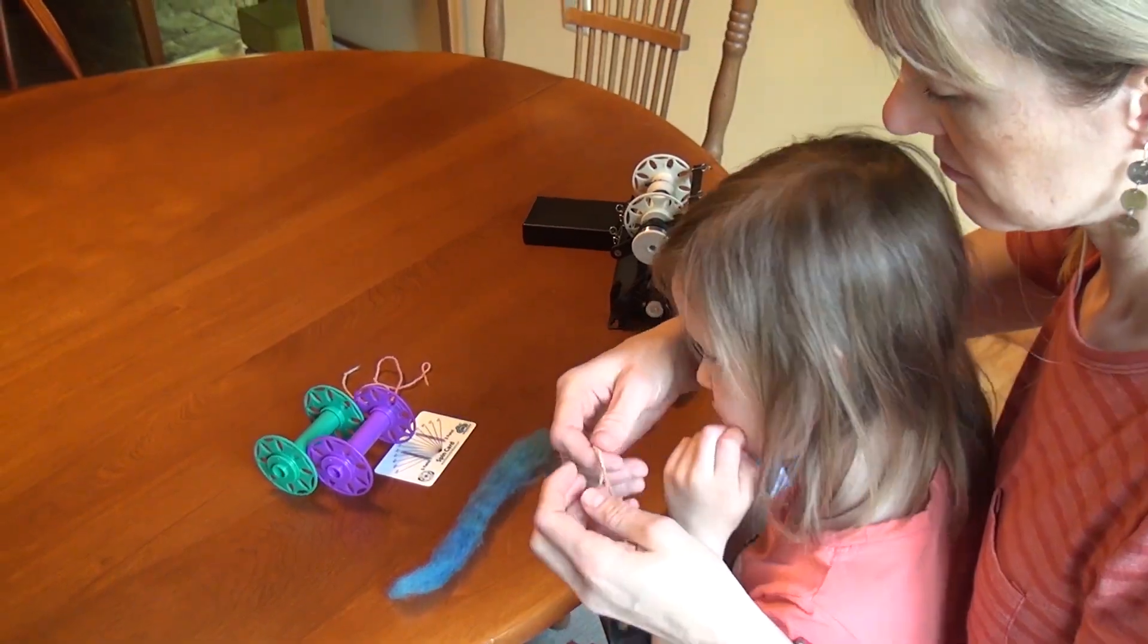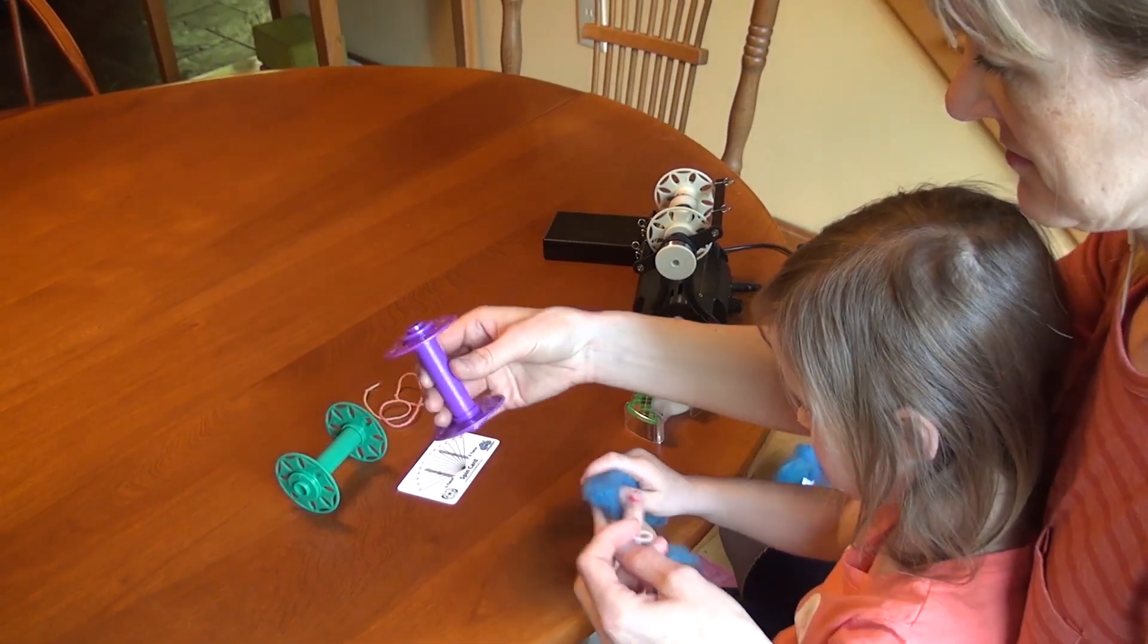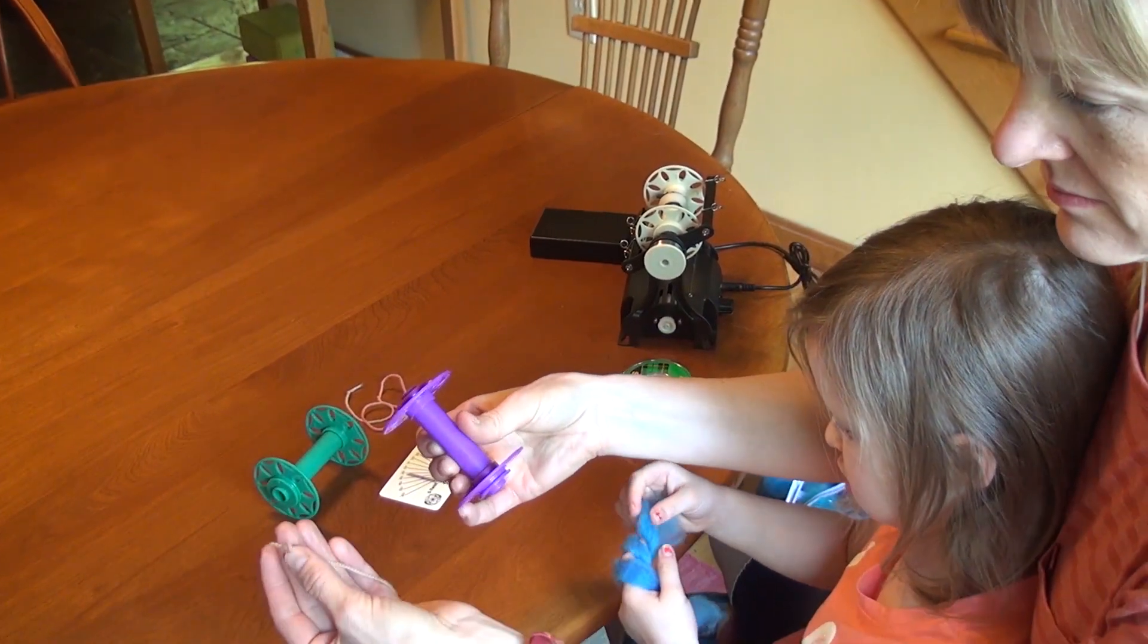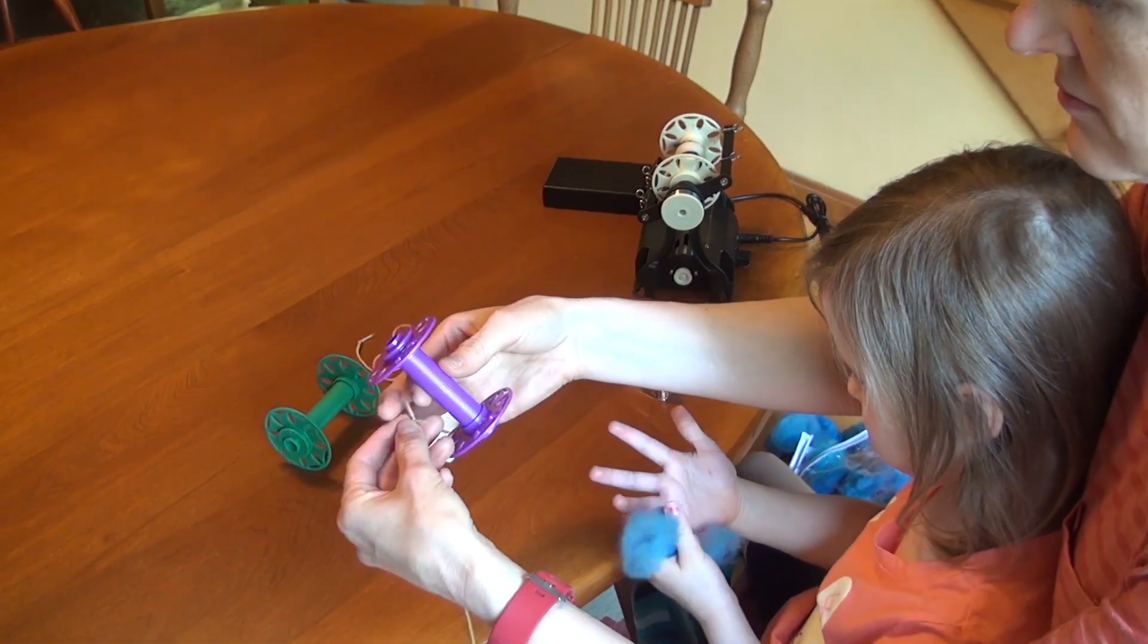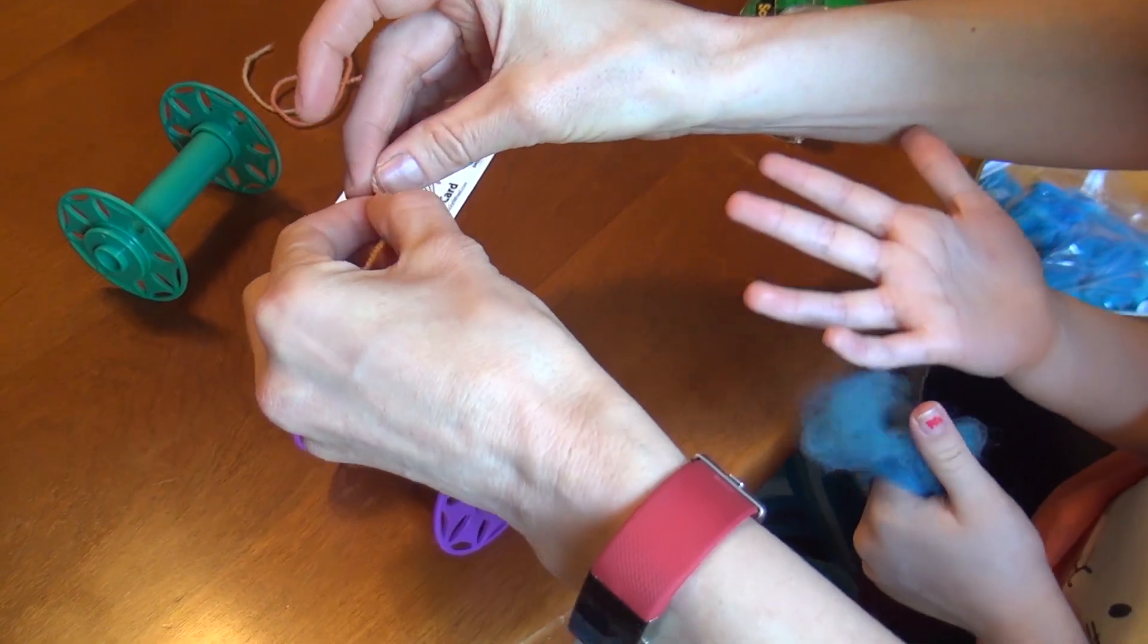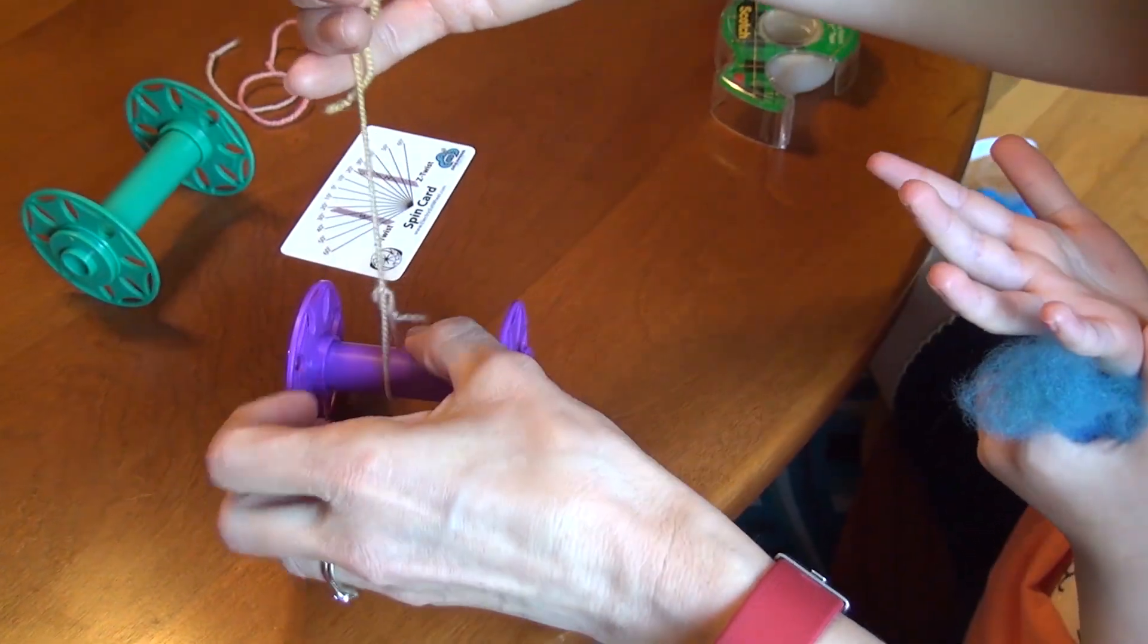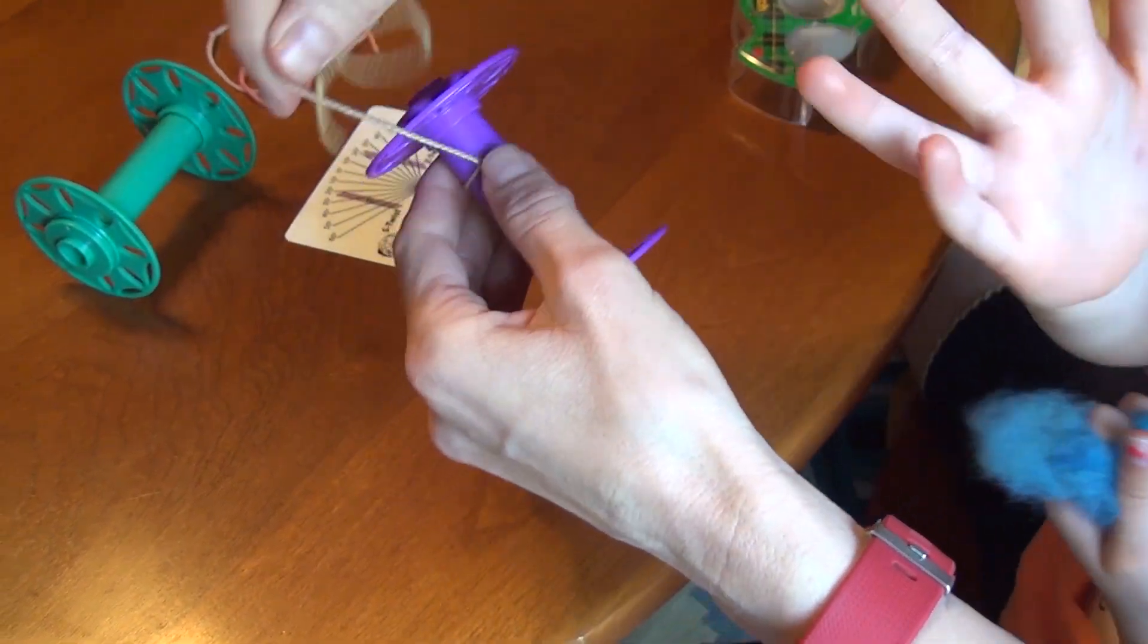When you first get your Nano, one of the things you'll want to do is attach lead yarn to each bobbin. This gives you something to attach your fiber to. There are lots of different ways of attaching lead yarn to a bobbin, and if you search this topic lots of people have different methods.